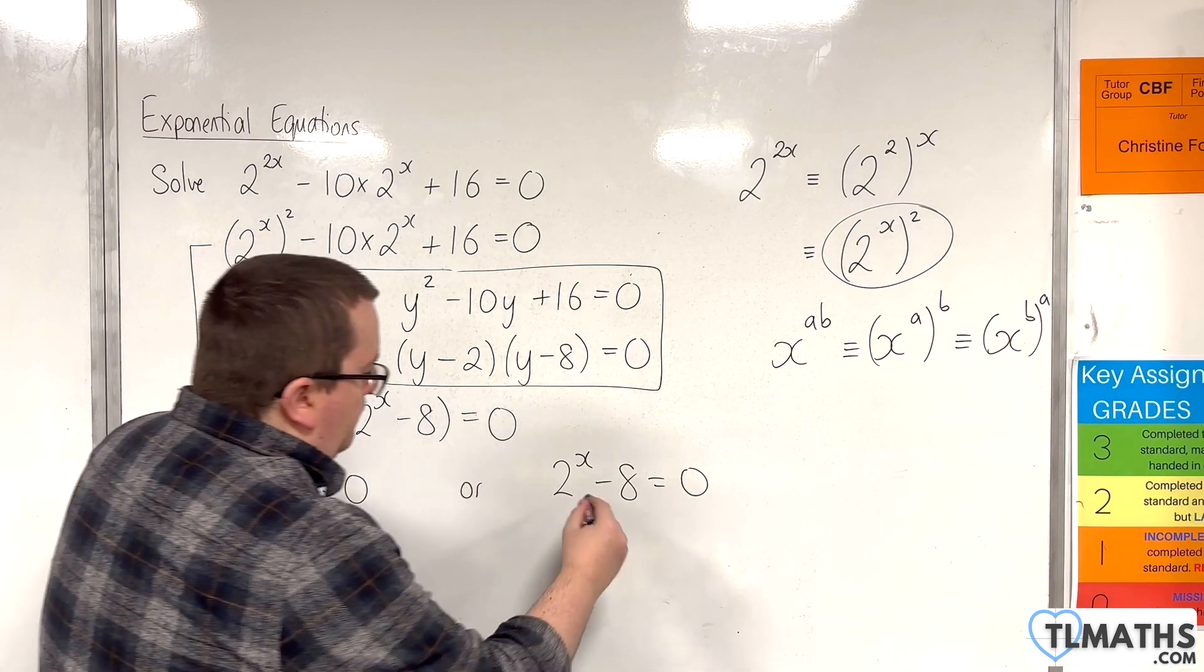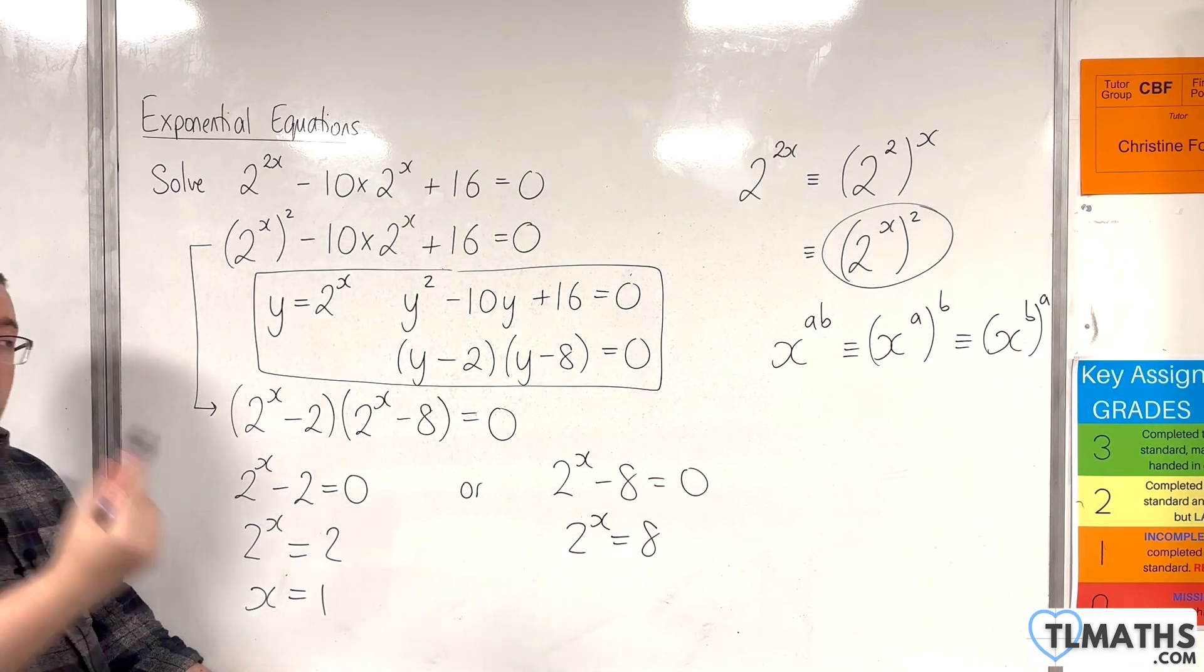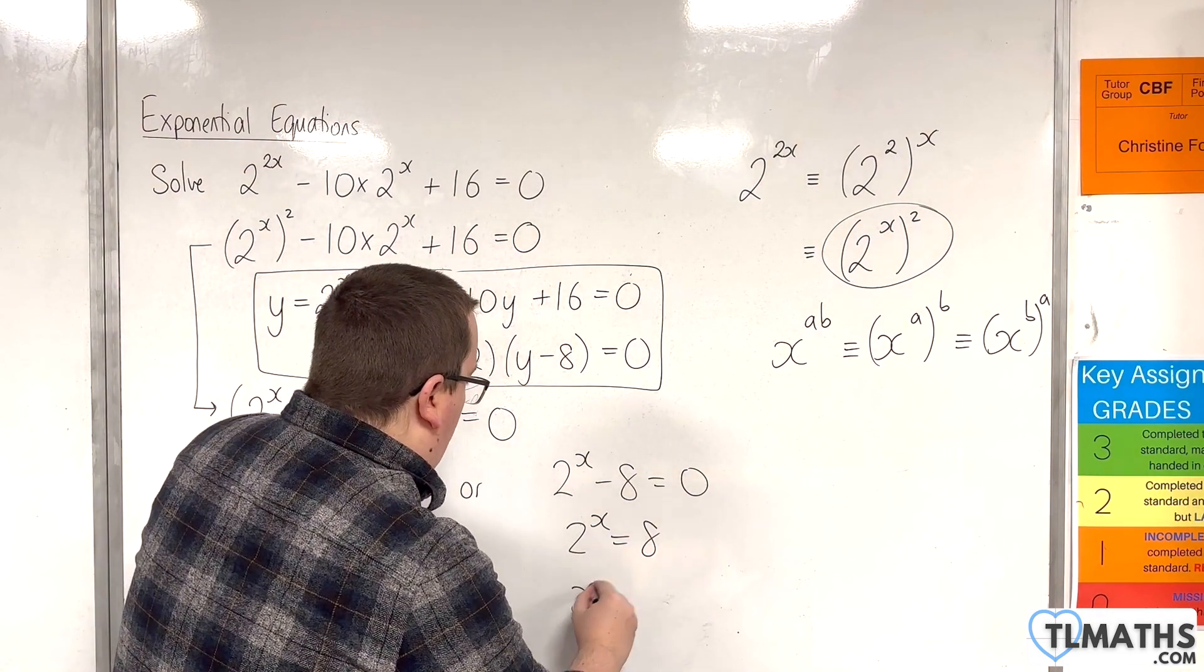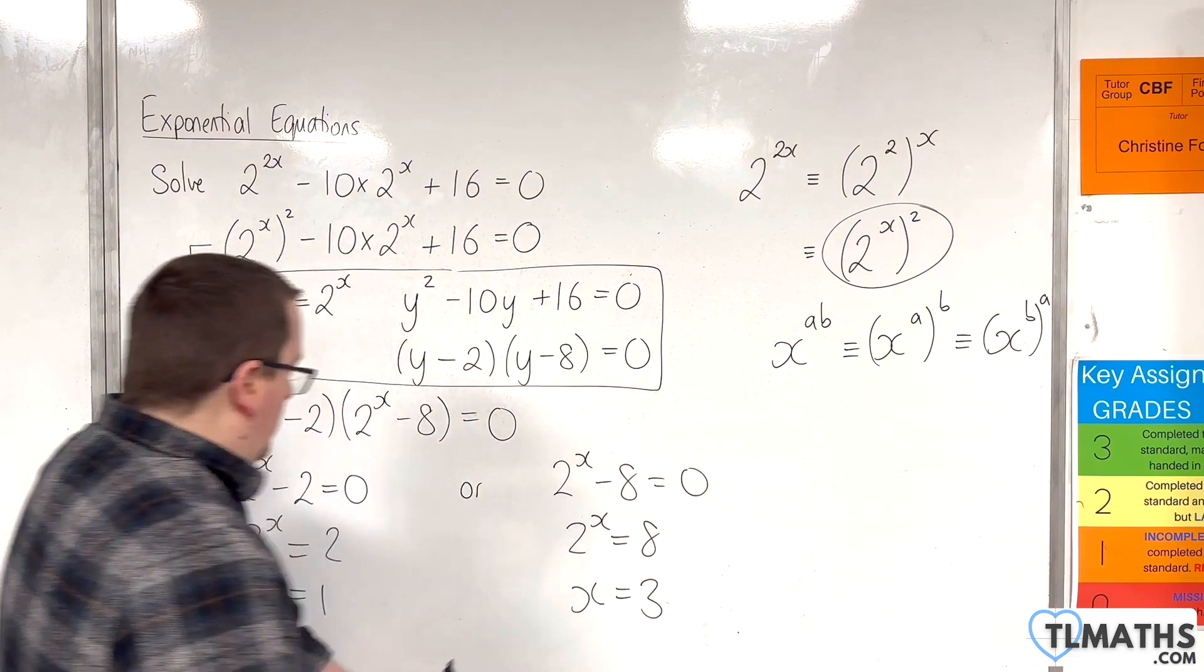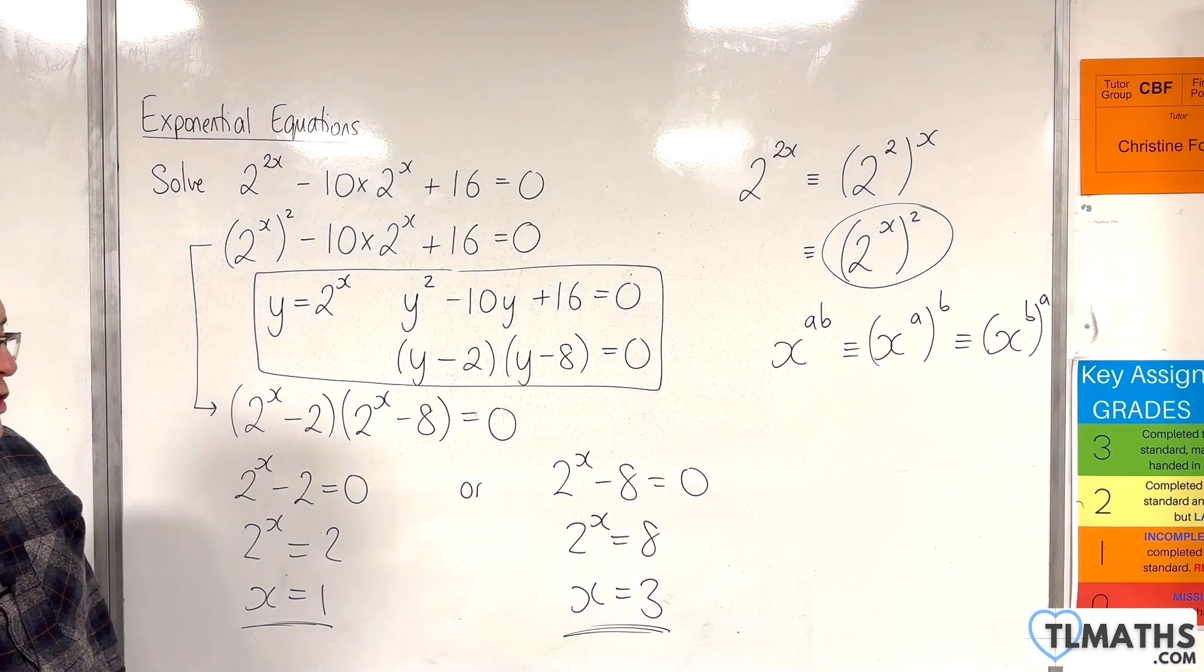This one, add the 8 to both sides. And so 2 cubed is equal to 8. So x would be equal to 3. And so x equals 1, or x equals 3, solves the original equation.